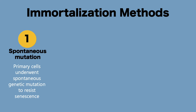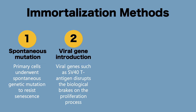There are different methods of cell immortalization. The first is by spontaneous mutation, where primary cells undergo spontaneous genetic mutation to resist senescence. The second is by introducing a viral gene such as the Simian Virus 40 T Antigen, or SV40 T Antigen. SV40 T Antigen binds to cellular proteins such as tumor suppressors RB family or P53 to inhibit their activity in the cell, promoting immortalization of the cells.